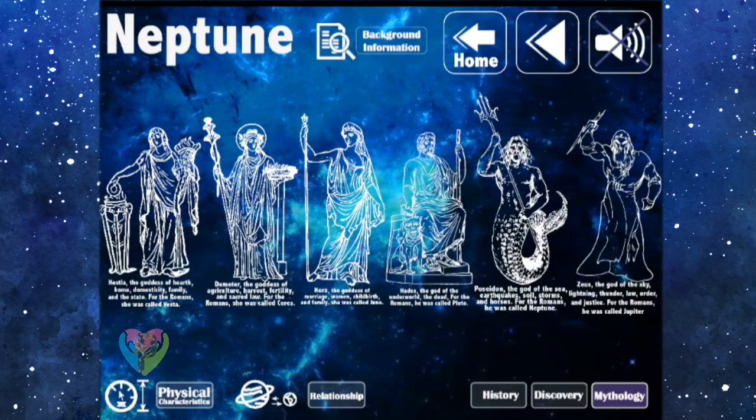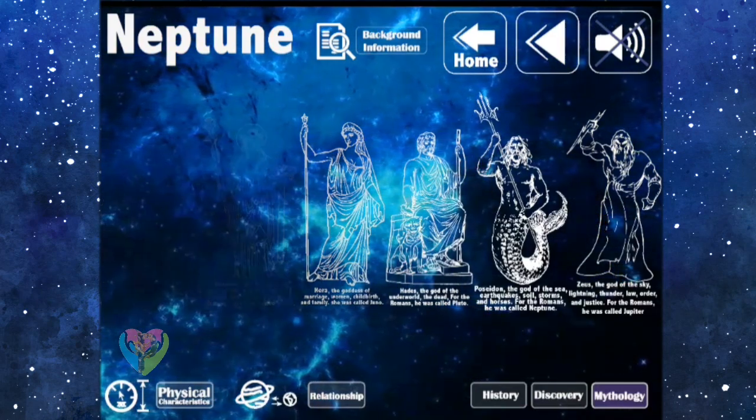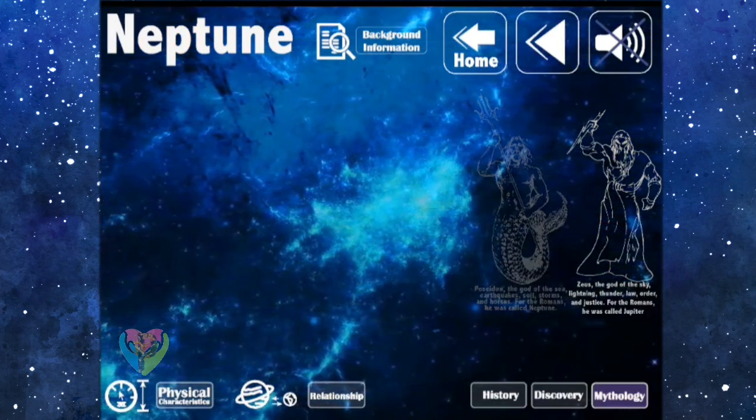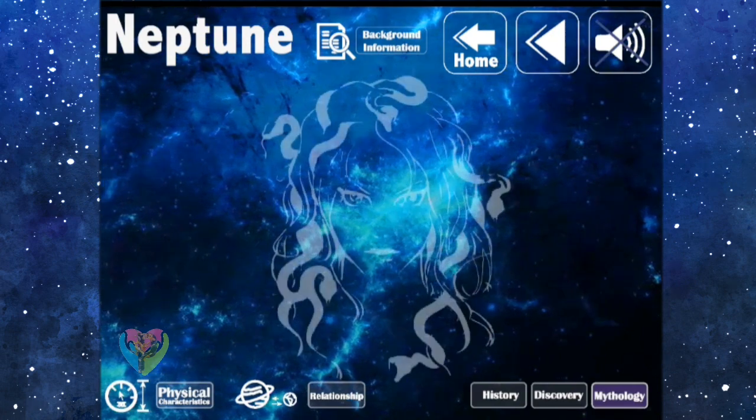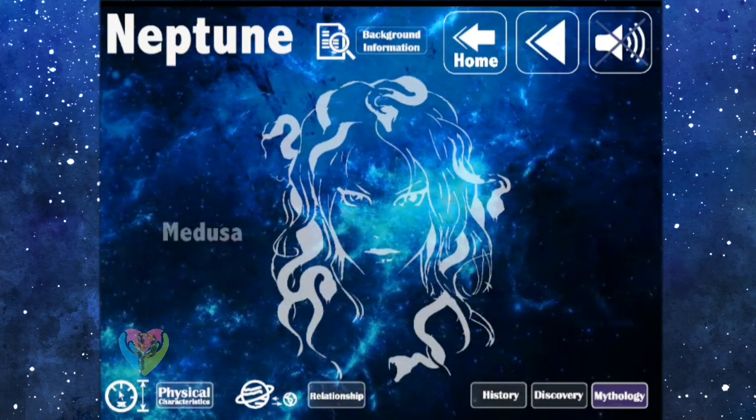6. Zeus: God of the sky, lightning, thunder, law, order, and justice. For the Romans, he was called Jupiter.